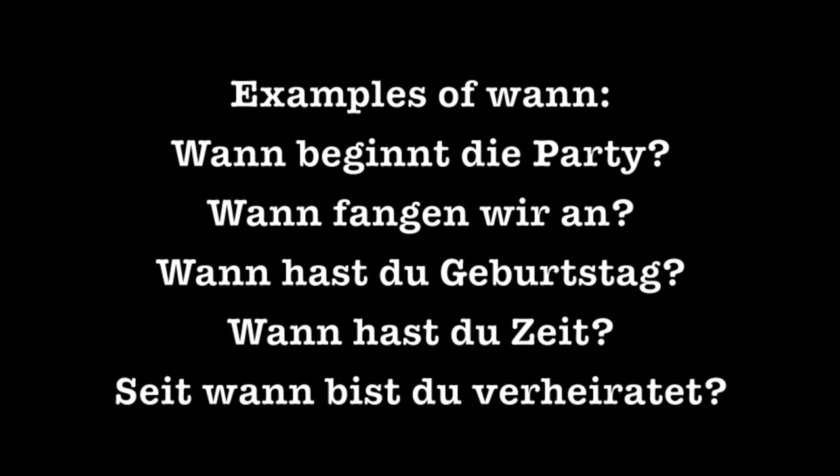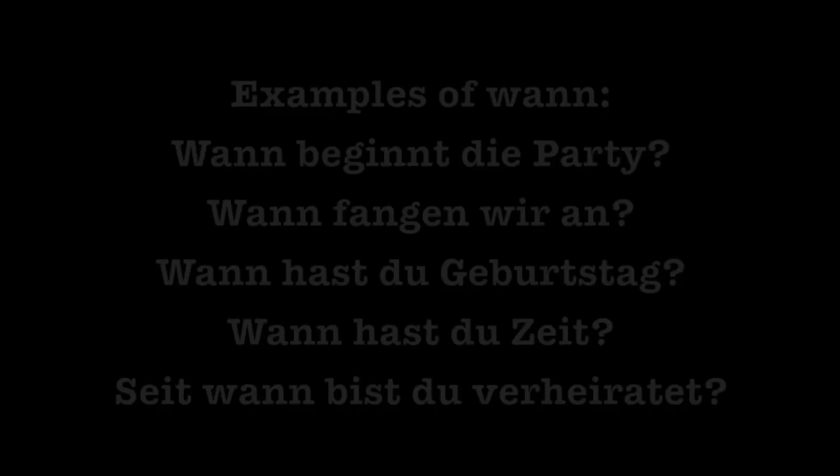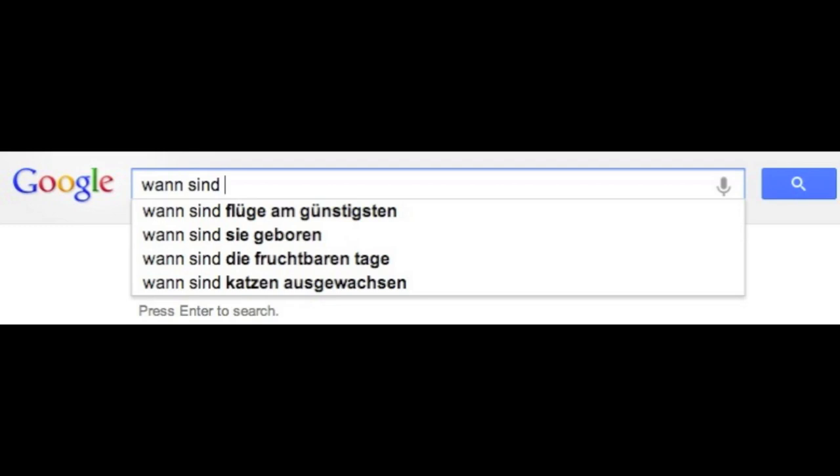The next question word is Wann, which means 'when' and is used to inquire about time. Examples: Wann beginnt die Party (when does the party start?), Wann fangen wir an (when do we begin?), Wann hast du Geburtstag (when do you have your birthday?), Wann hast du Zeit (when do you have time?), Seit wann bist du verheiratet (since when are you married?). Googling 'Wann sind' returns: Wann sind Flugzeuge am günstigsten (when are flights cheapest?), Wann sind sie geboren (when were you born?), Wann sind die furchtbaren Tage (when are the terrible days?), Wann sind Katzen ausgewachsen (when are cats full grown?).